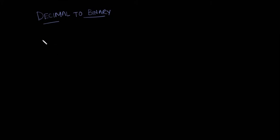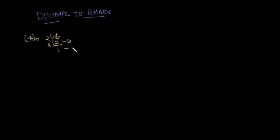In the last video we saw how to convert a decimal number to binary by successive divisions by 2. For example, the number 4 divided by 2 gives quotient 2, remainder 0; 2 divided by 2 gives quotient 1, remainder 0; 1 divided by 2 gives quotient 0, remainder 1. Reading remainders from bottom to top gives the binary value of 4 as 1 0 0.